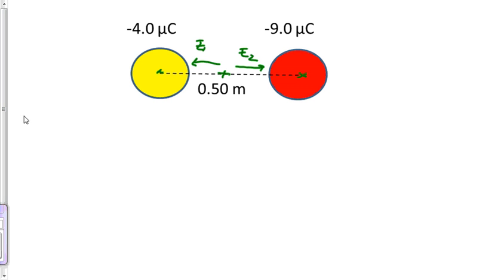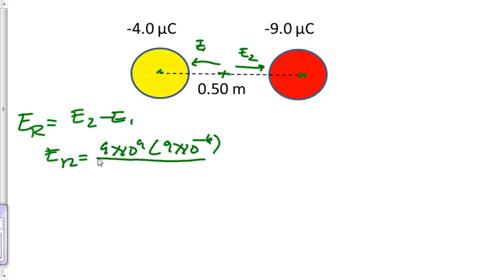So let's do electric field resultant. Let's do electric field two minus electric field one. So E sub r is going to equal 9 times 10 to the 9th multiplied by 9 times 10 to the minus 6 divided by 0.25 squared.